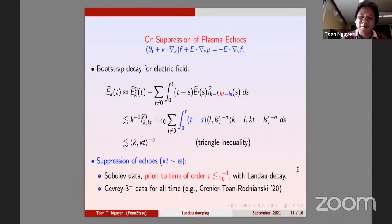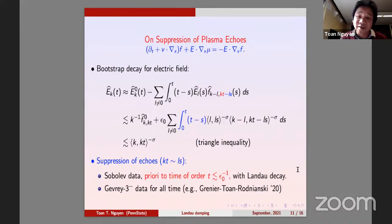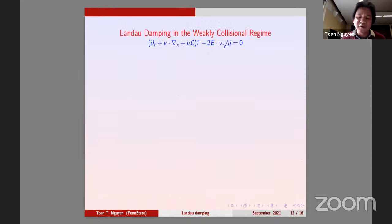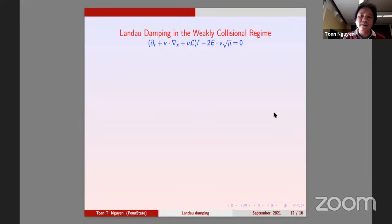Now, up to time of order one over epsilon zero — where epsilon zero will be nu to the one third — we still have Landau damping without collisions. Now you add collisions. Remember, you cannot treat collisions as a perturbation, so you really have to do Landau damping with collisions, with the full equations.